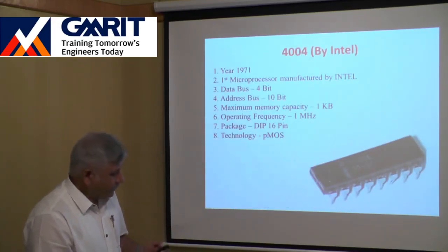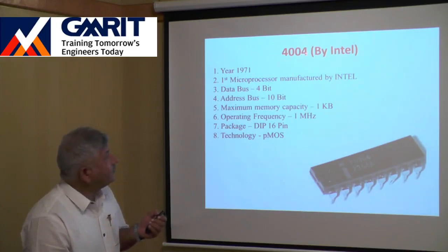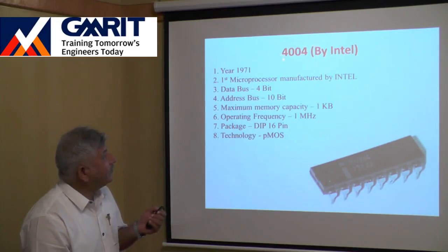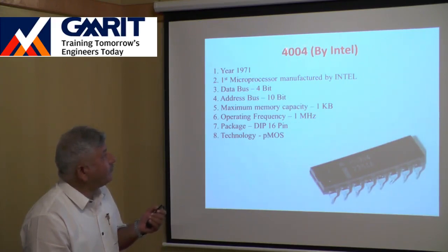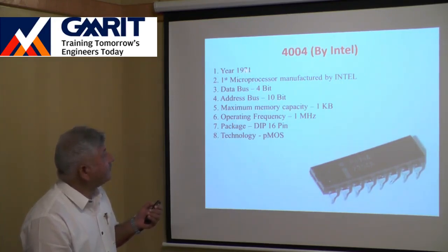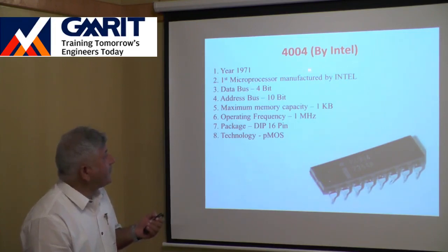The 4004 was the first microprocessor made by Intel — and the first in the world. Intel gave it the part number 4004, and it was designed and manufactured in 1971.